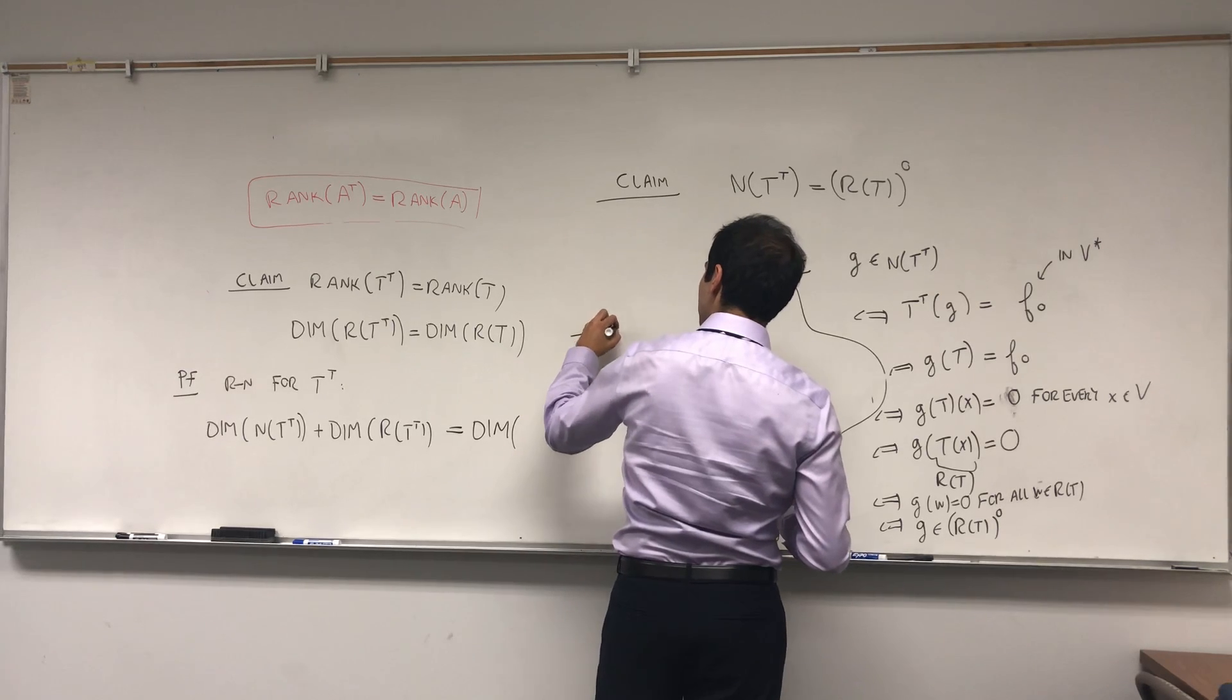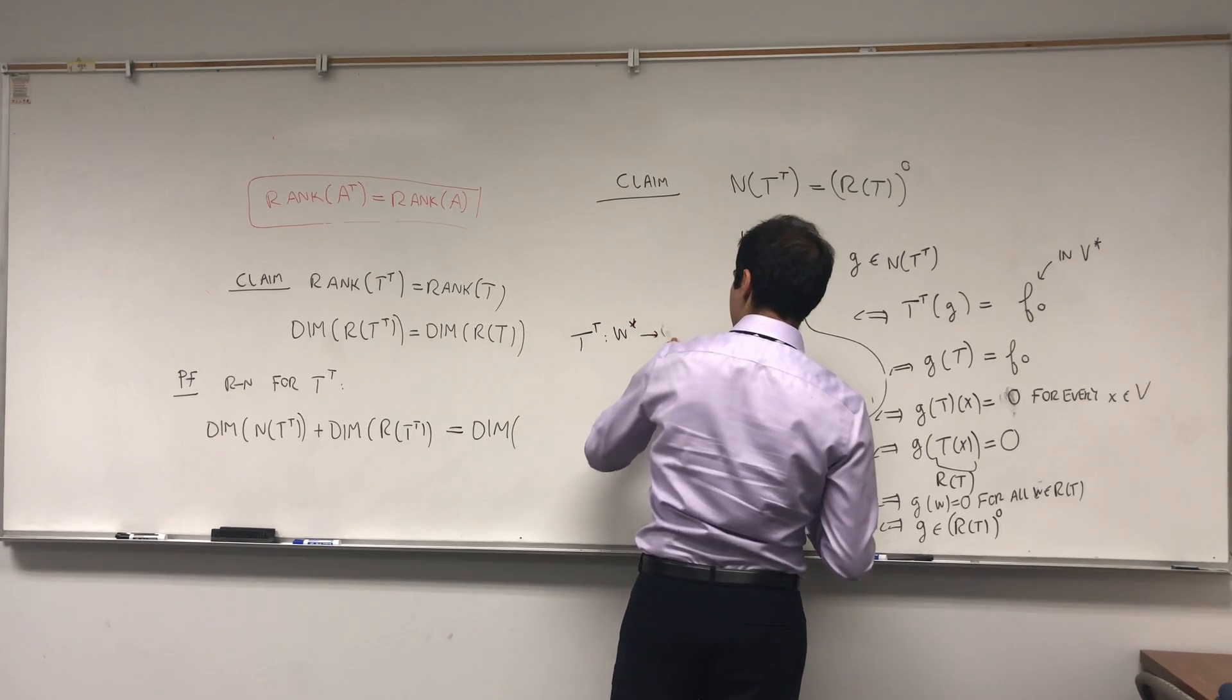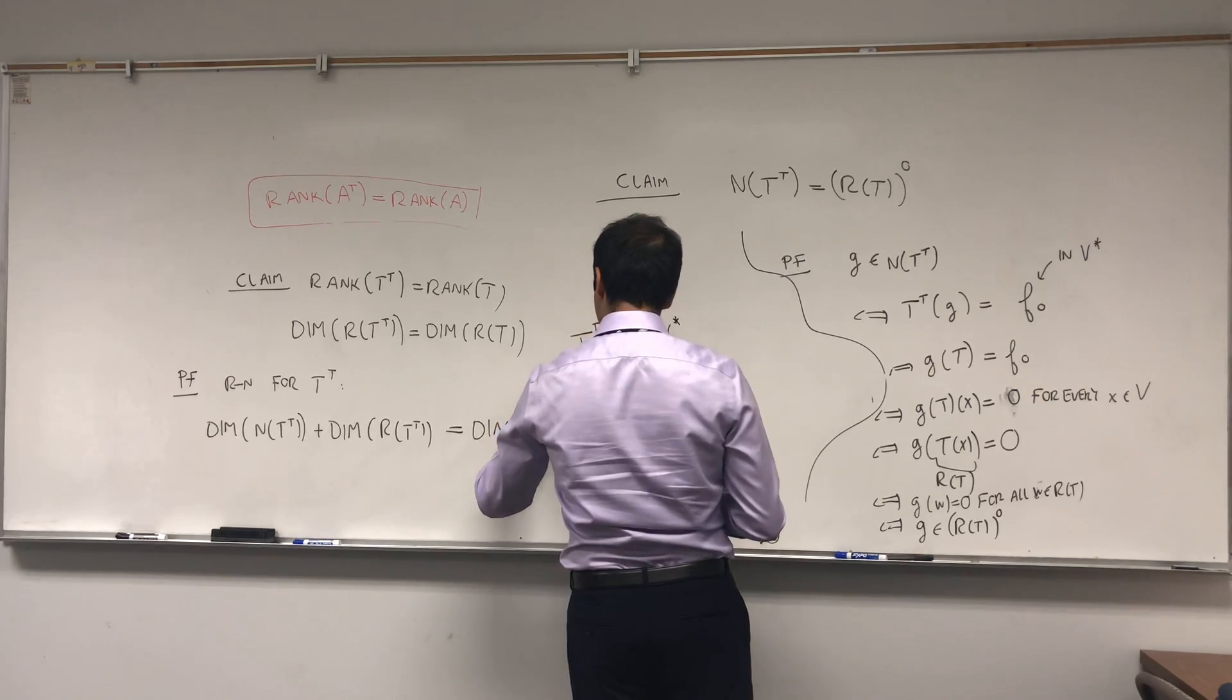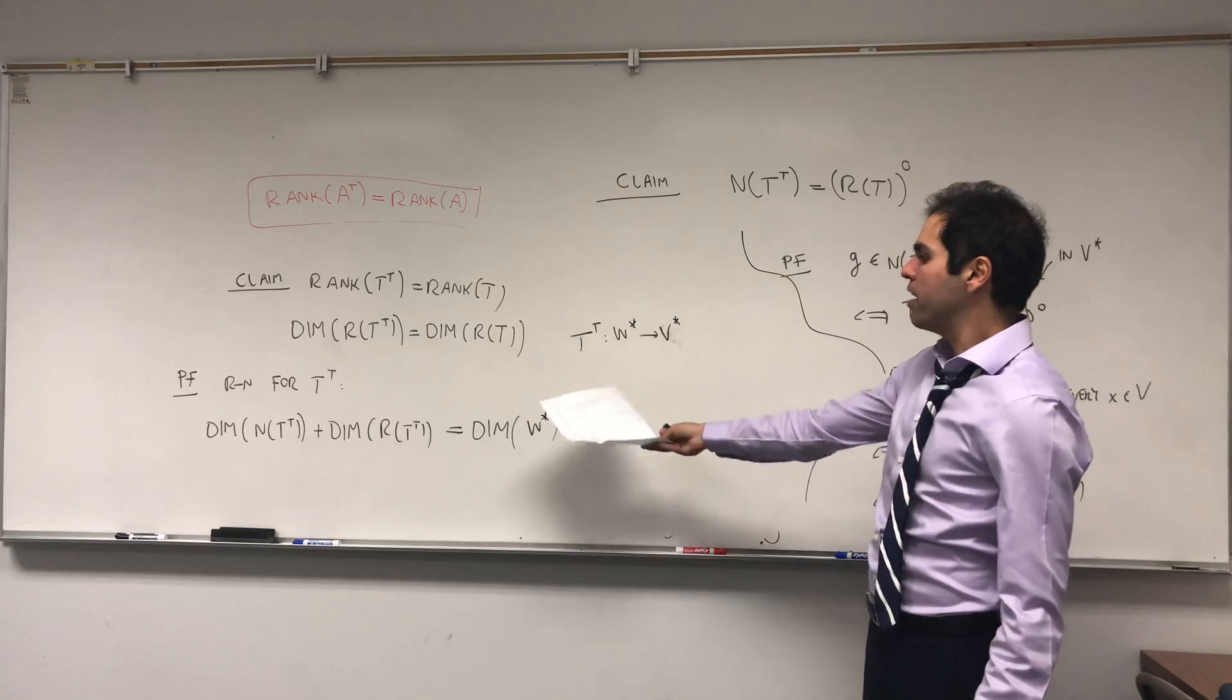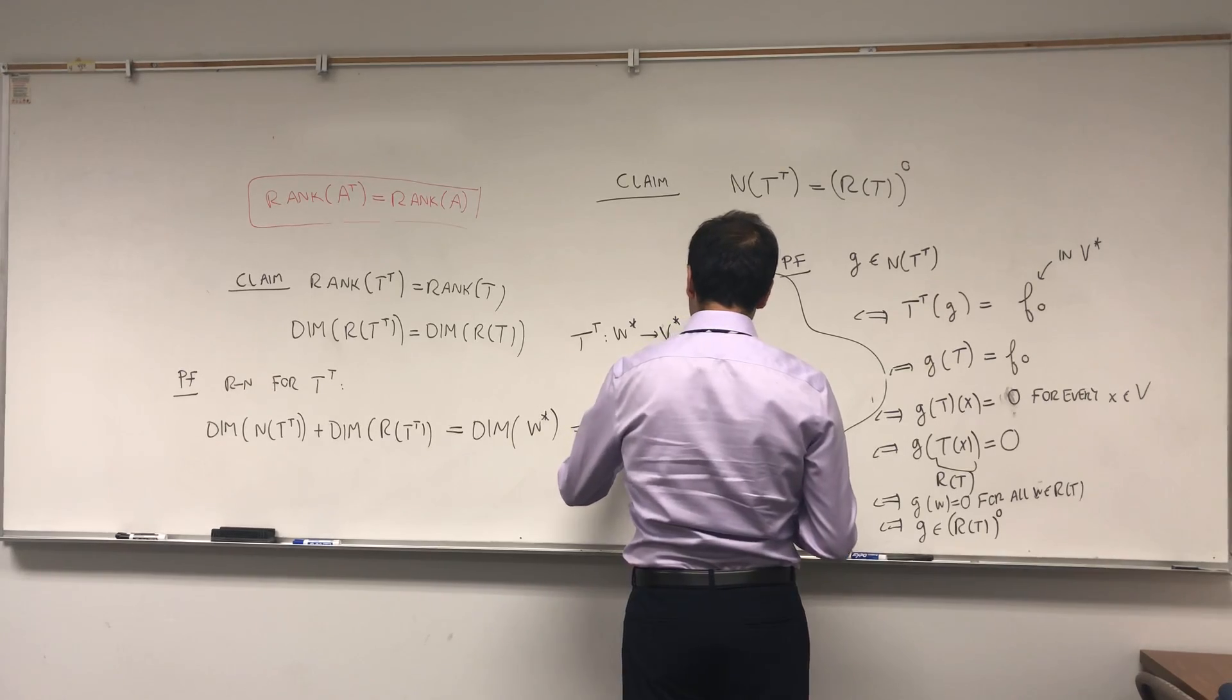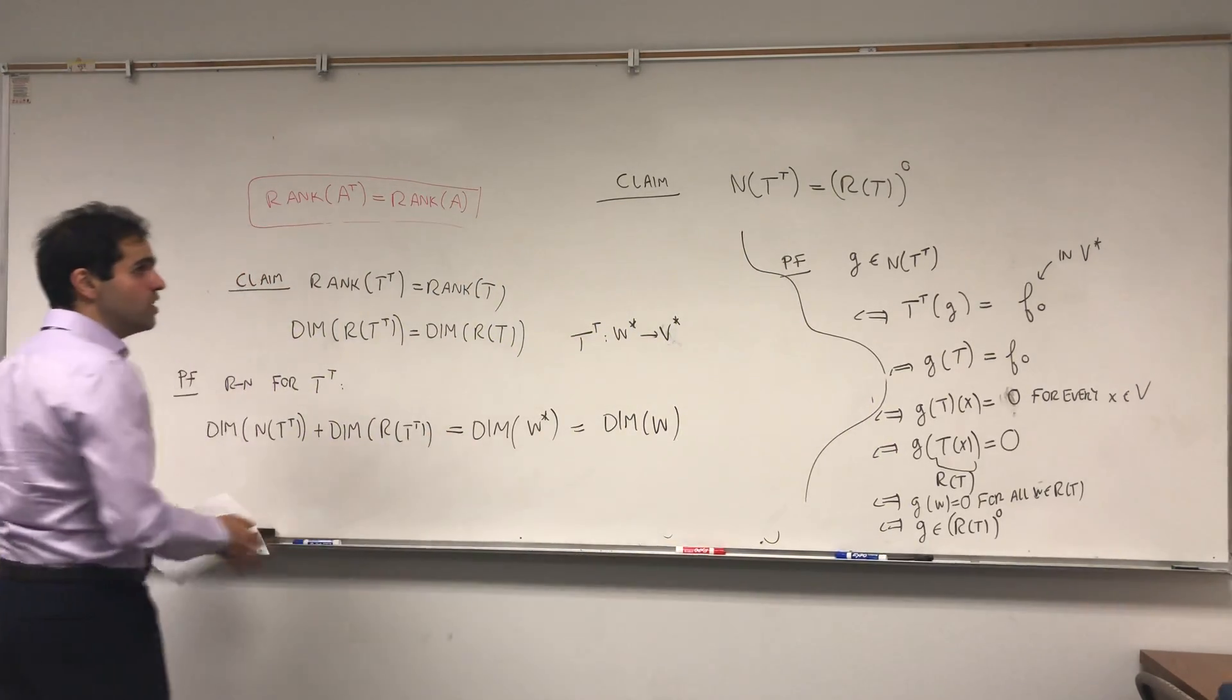So, here, the domain of T transpose is W star, so it's dimension of the domain, which is the dimension of W star, but, at least in finite dimensions, so here we do it for finite dimensions, this equals to the dimension of W. That's on the one hand.